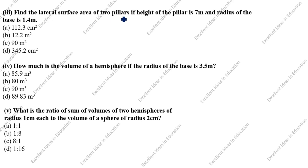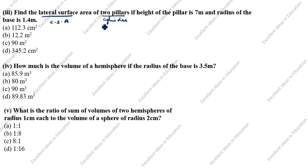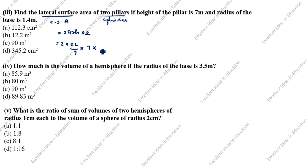Find the lateral surface area of two pillars, if the height of the pillar is 7 meters and the radius of the base is 1.4 meters. Pillar means we will use the cylinder formula. Lateral surface area means curved surface area. The curved surface area of a cylinder formula is 2πrh. For two pillars: 2 × (2 × 22/7 × 1.4 × 7 × 2).